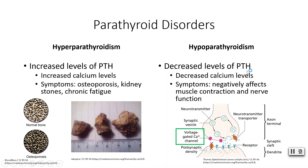Hypoparathyroidism — not enough PTH — results in blood calcium levels that are too low. This is a serious problem because calcium is involved in action potentials. At the neuromuscular junction, voltage-gated calcium channels are responsible for neurotransmitter release. Without enough calcium, we may not be able to release enough neurotransmitter to initiate the next action potential on a nerve or muscle fiber.